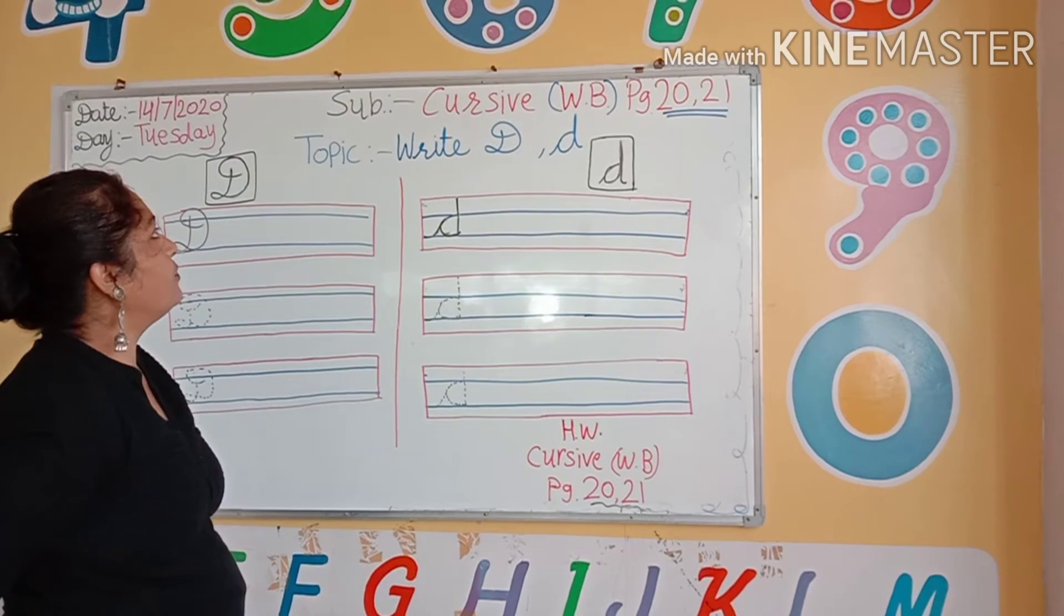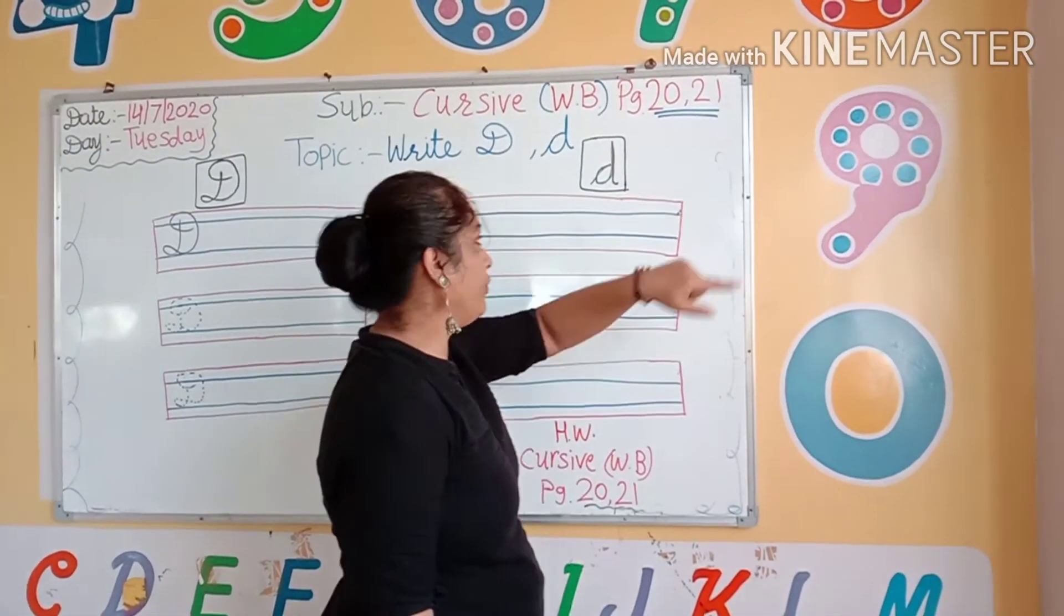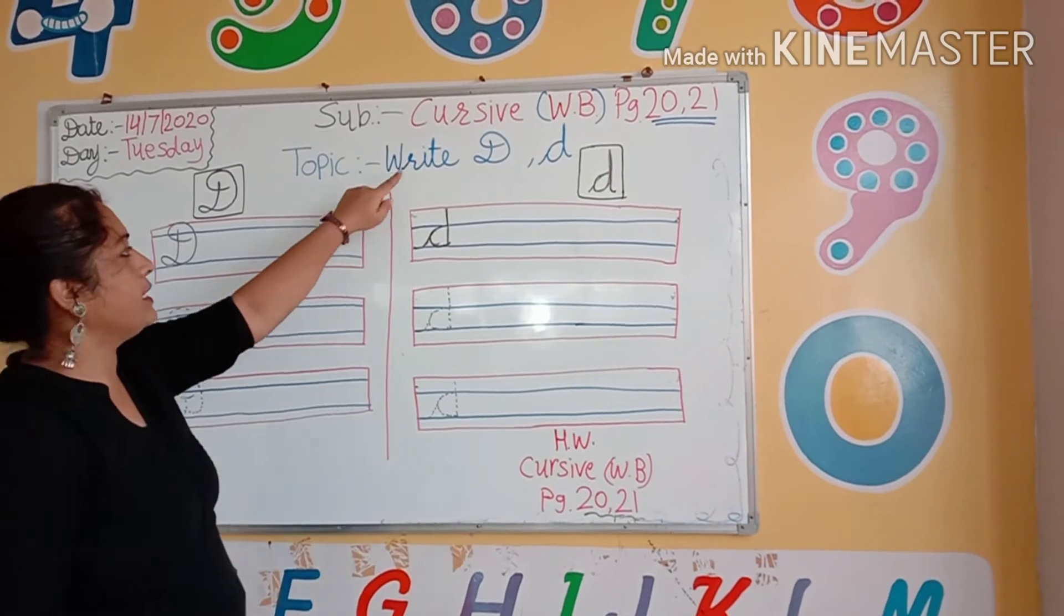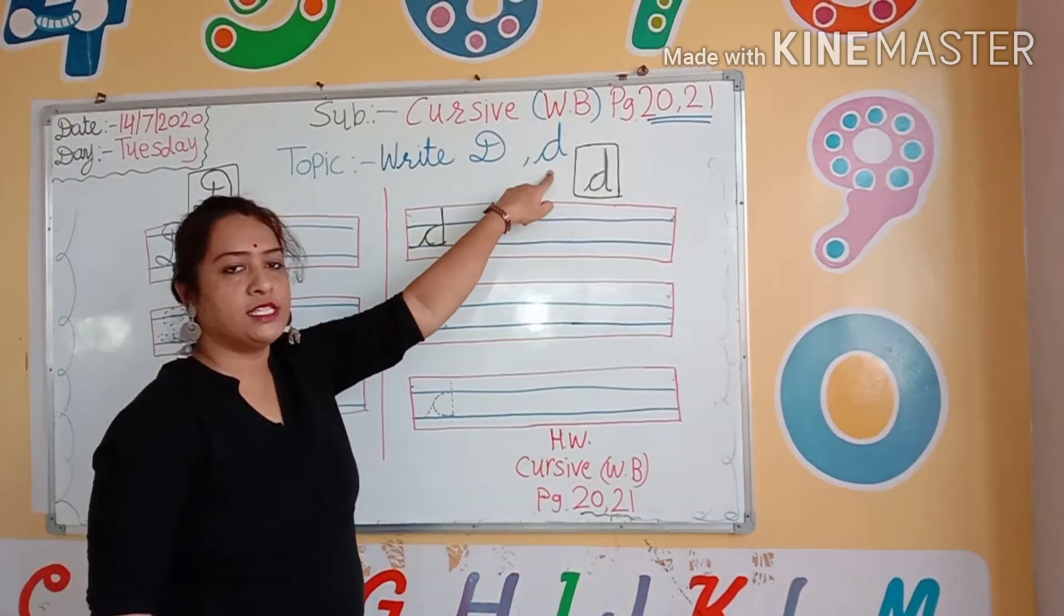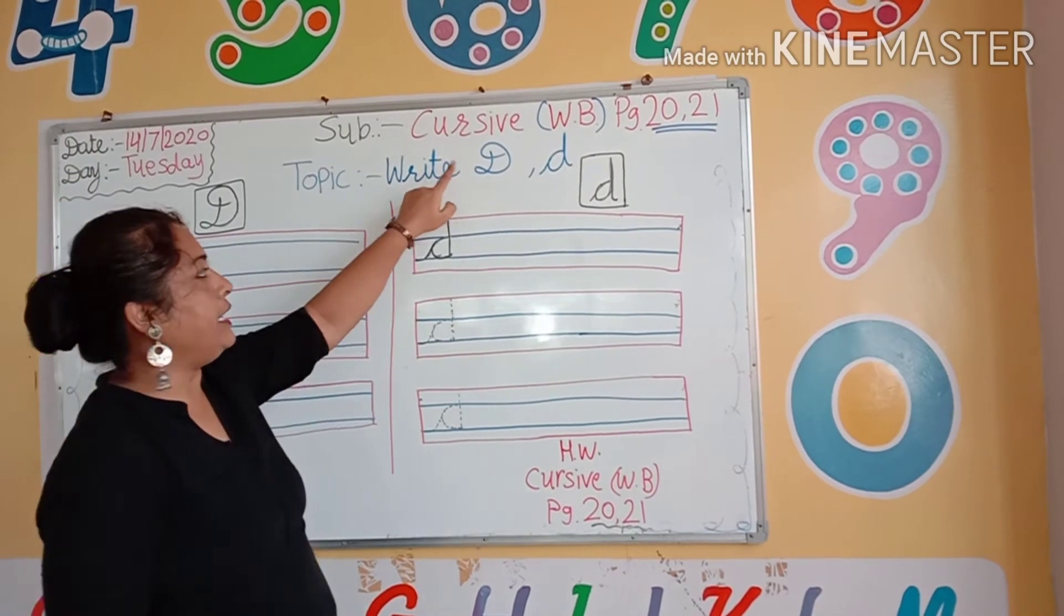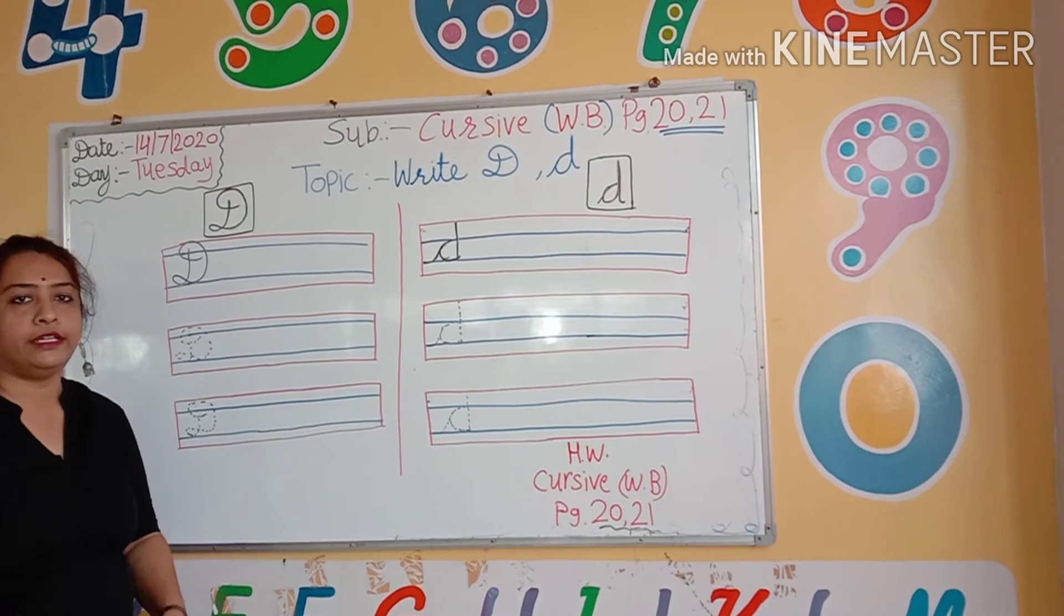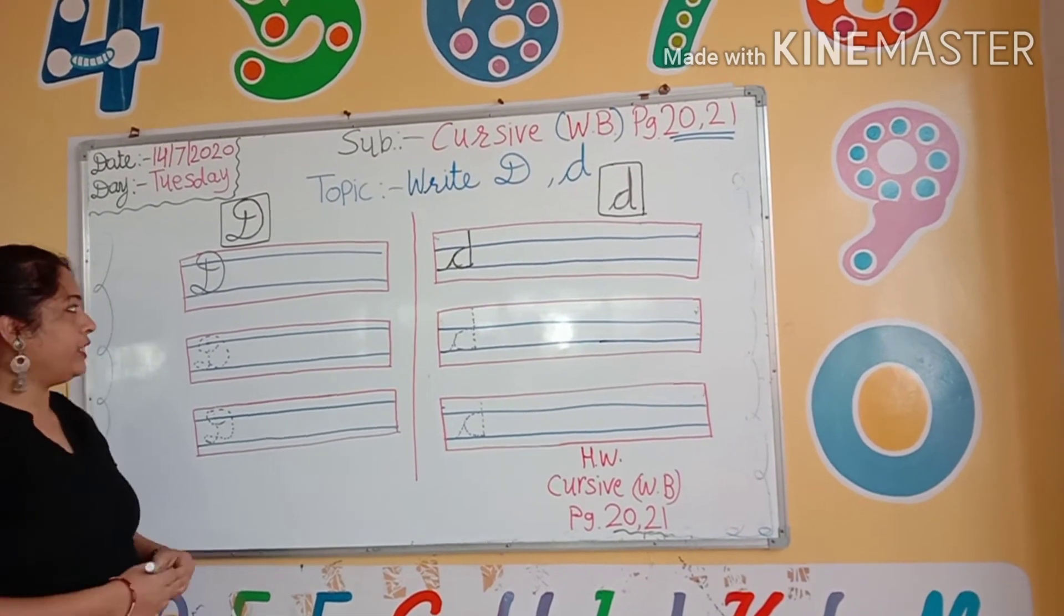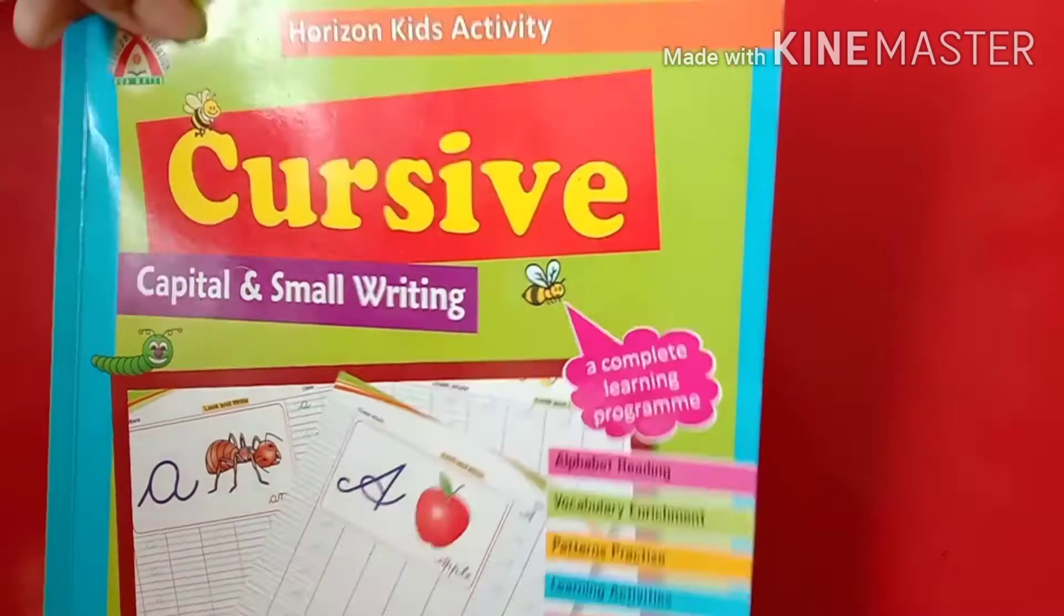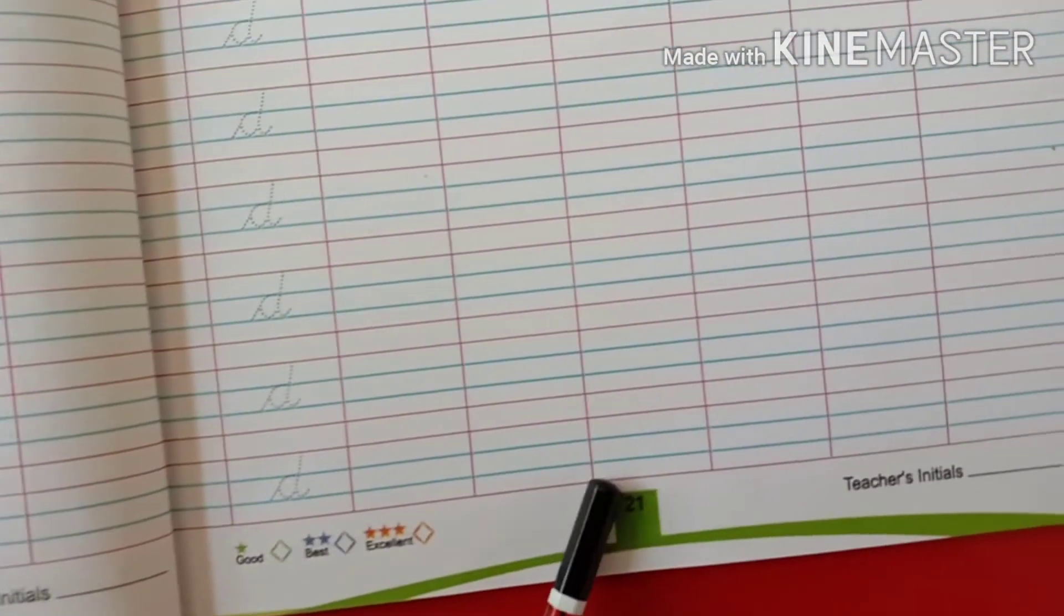So kids, our next subject is cursive workbook, page number 20, 21. And today's topic is write capital D and small d. What is our today's topic? Cursive, write capital D and small d. D for dog. Take this book, cursive workbook, and open page number 20 and 21.